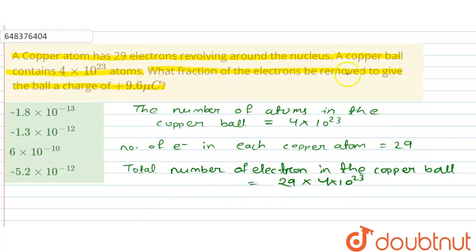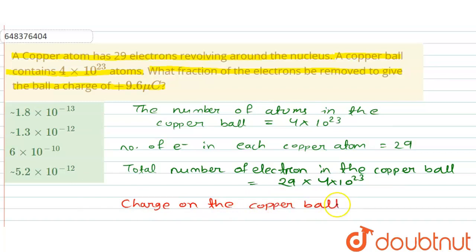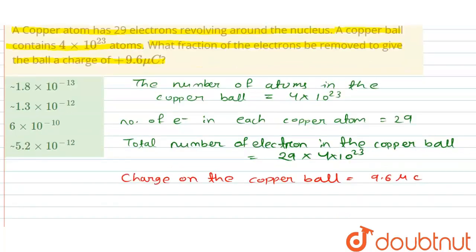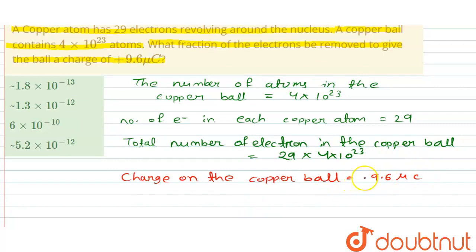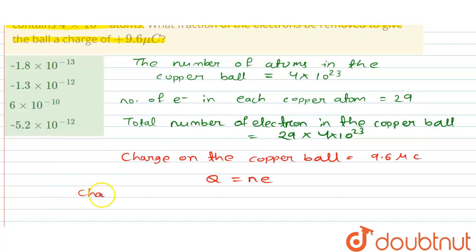Now we have to calculate how many electrons are to be removed to give the ball a charge of 9.6 microcoulombs. The charge on the ball is 9.6 microcoulombs. Using the formula Q = n × e, charge is always an integral multiple of the charge of an electron, and the charge of an electron is 1.6 × 10⁻¹⁹ coulombs.